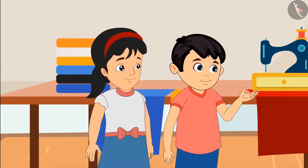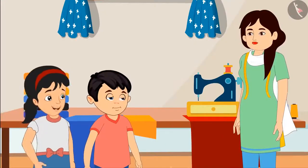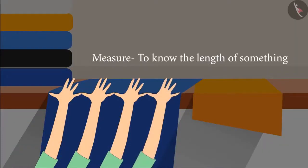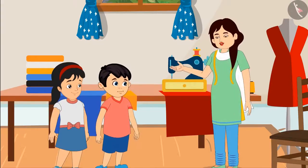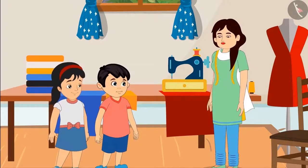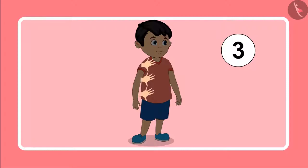Pinky asks aunty what she is doing with her hand. Aunty explains she is taking measurements. She shows Chotu how she measured the length of his shirt with her hand: one, two, three. His shirt is three hand spans long.